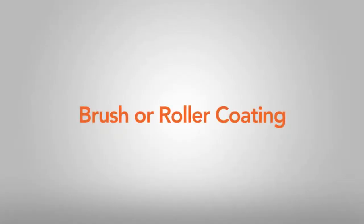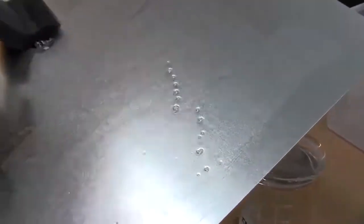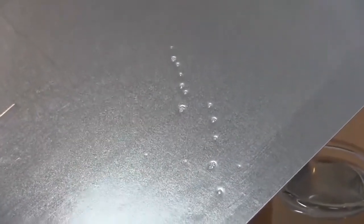Brush or roller coating. Applying Gentoo with brushes or rollers may result in bubbles within the coating. This can be avoided by using a slower application speed and less pressure.